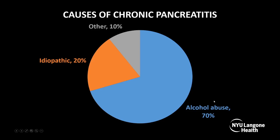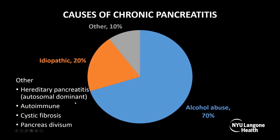On the other hand, chronic pancreatitis is caused by alcohol abuse in 70% of cases. It's idiopathic in 20%, and other causes account for the remaining 10%, which include but are not limited to autosomal dominant hereditary pancreatitis, autoimmune pancreatitis, cystic fibrosis, and pancreas divisum, among other causes.